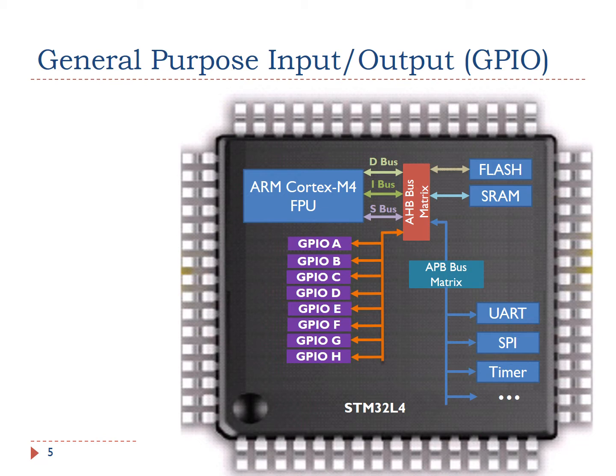The chip also has a bridge that connects AHB to advanced peripheral bus, APB. APB is for low-bandwidth peripherals. APB connects most of the peripheral devices in the system, such as UART, SPI, and timer.